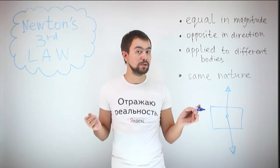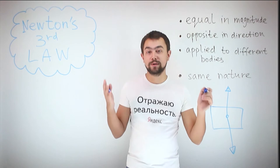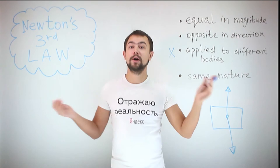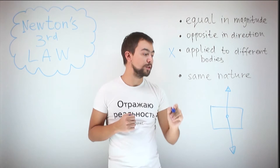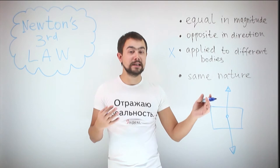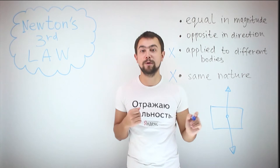For two forces to be a Newton's third law pair, they have to be equal in magnitude — yes, they are. Opposite in direction — yes, they are. Applied to different bodies — no, they are applied to the same body. And they have to be the same nature — these forces are not of the same nature, because the downward force is the weight, the gravitational pull, and the upward force is the electromagnetic force, the reaction of the table. So they don't have the same nature, and these two forces do not make a Newton's third law pair.